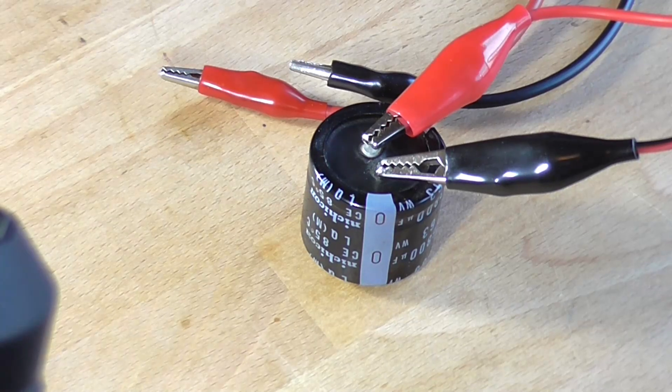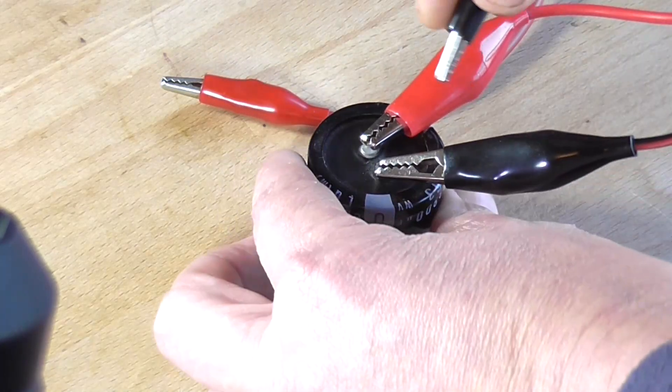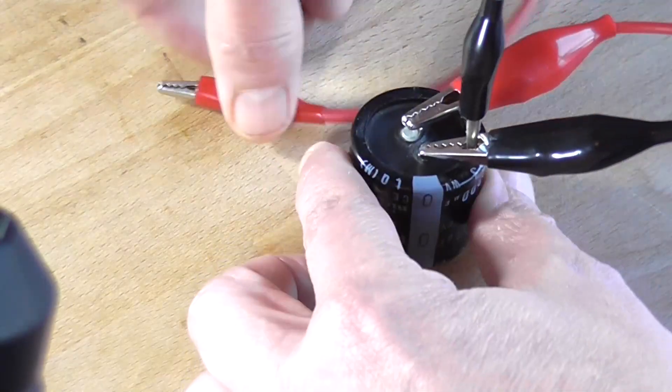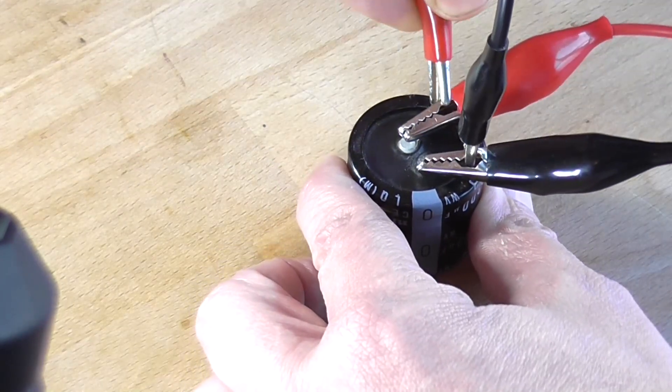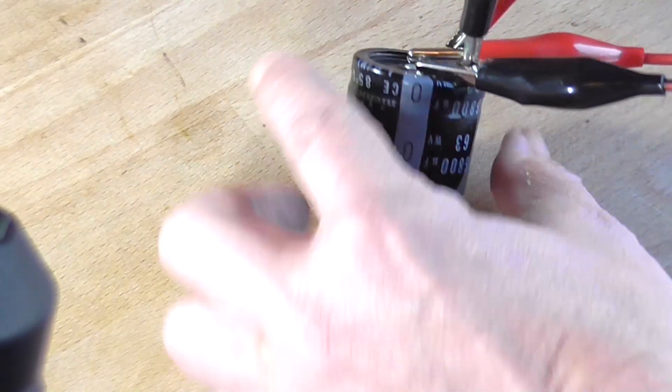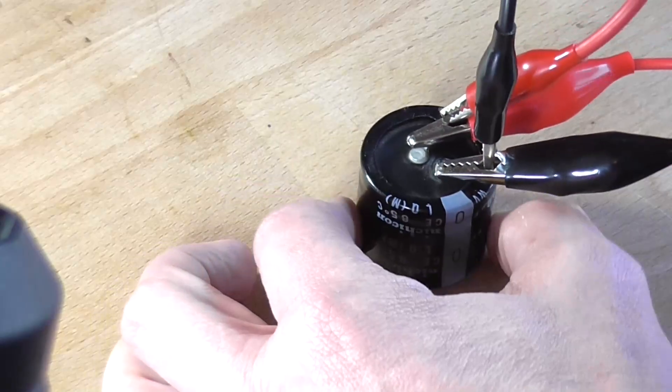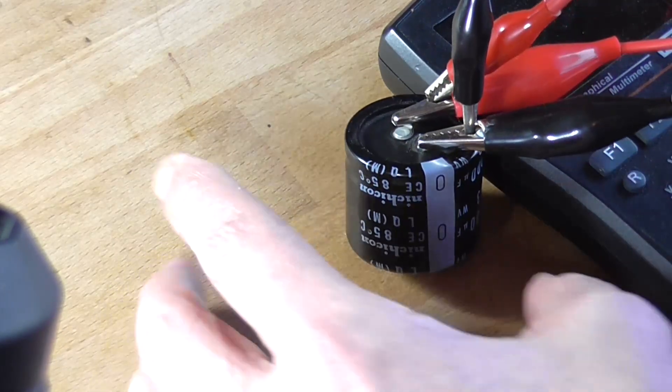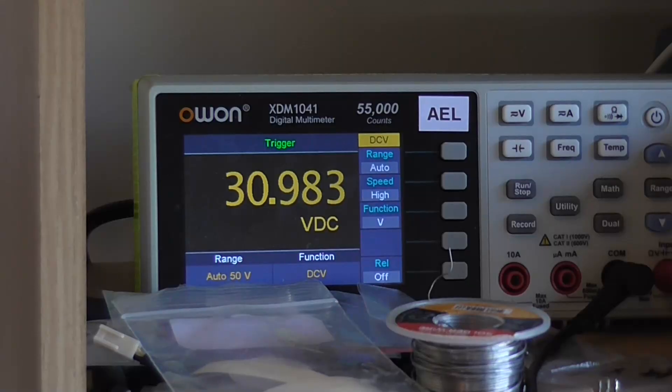So what I want to do now is I actually want to measure the voltage at the capacitor. So I'm going to connect my multimeter in volts mode and hopefully that will stand up. Probably won't. And that's good enough. So the multimeter says we're at 30.9 volts. So the supply has dropped back down to 31 and it's close enough.